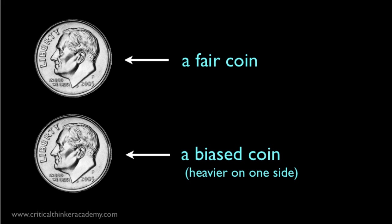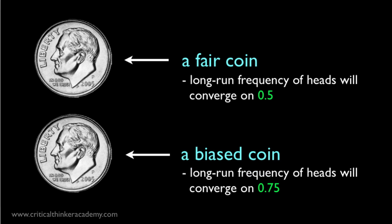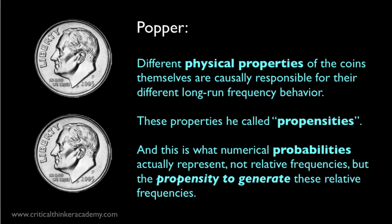Popper thinks there's something incomplete about this approach. Consider two coins. The first is a fair, unbiased coin. The other is a biased coin weighted more on one side than the other. So when you toss it, it lands heads more often than tails. Let's say that in the long run, it lands heads three-quarters of the time. Popper asks us to consider these two coins sitting in front of us on the table. These coins will generate different long-run frequencies when you toss them. Why? What explains this difference in behavior? The obvious answer, says Popper, is that the two coins have different physical characteristics that are constantly responsible for their long-term frequency behavior. It's these different physical characteristics that Popper calls propensities. It's their different propensities to land heads that account for the differences in their frequency behavior.